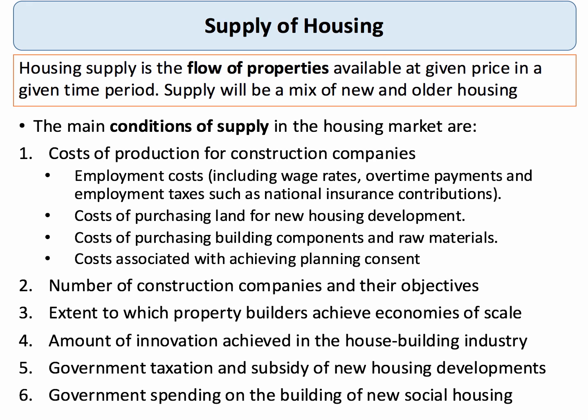Construction costs are also affected by the pace of innovation in the building industry. Some companies close to the technological frontier can find processes, techniques, and new materials which allow them to build more homes more cheaply. The government can also impact on housing supply — taxes and subsidies on building companies will affect costs. And crucially, the government itself, perhaps through local authorities, can be an actual builder and constructor of new homes, for example through new social housing developments.